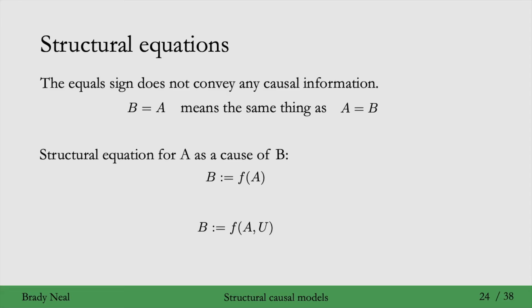Graphically, we can think of this structural equation as this, where a is a parent of b, and u is a parent of b, and oftentimes u will be unobserved, which we denote with a dotted circle around that node.